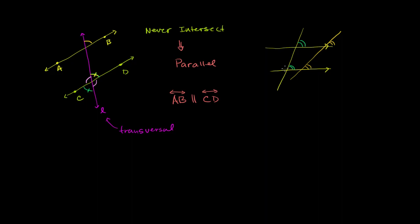If you put a protractor here, you would have one side of the angle at zero degrees and the other side would specify that point. If you put the protractor over here, the exact same thing would happen — one side would be on this parallel line and the other side would point at the exact same point. So all of these things in green are equivalent. This angle is going to have the same measure as this angle, and that's going to be the same as this angle because they are vertical angles.